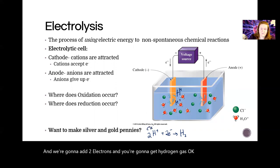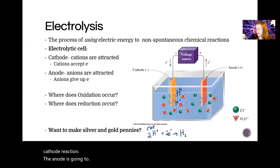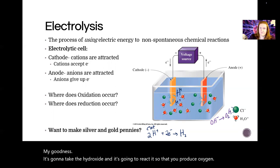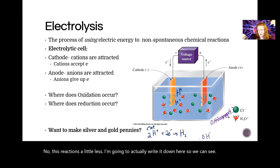The anode is going to take the hydroxide and it's going to react it so that you produce oxygen. Now this reaction is a little less straightforward. I'm going to actually rewrite it down here so we can see. So you're going to end up with two hydroxides and it's going to form water plus half of an oxygen and two electrons.